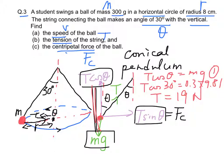By using T sin θ equals Fc, the centripetal force would be equal to 19 times sin 30 degrees, which is equal to 9.5 N. The centripetal force is equal to 9.5 N.